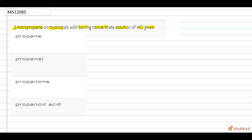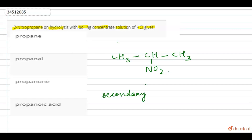For this we should know that whenever 2-nitropropane, which has structure CH3-CH(NO2)-CH3, or any secondary nitroalkane, on reaction with boiling HCl followed by hydrolysis...